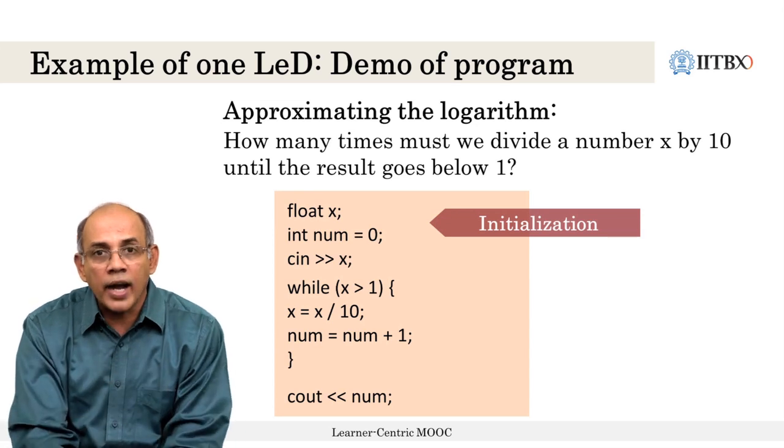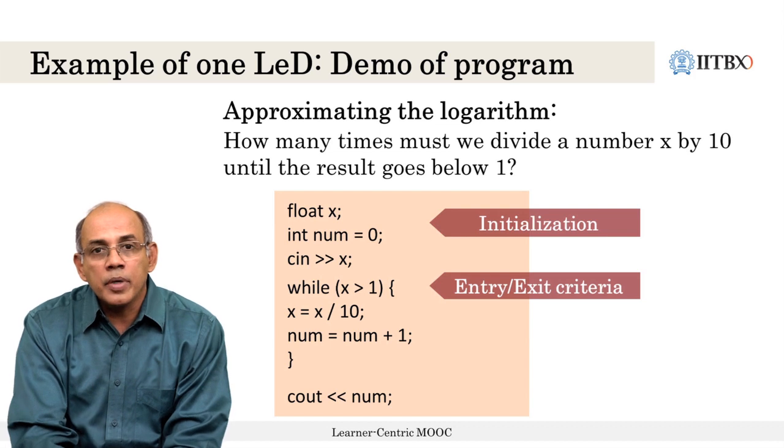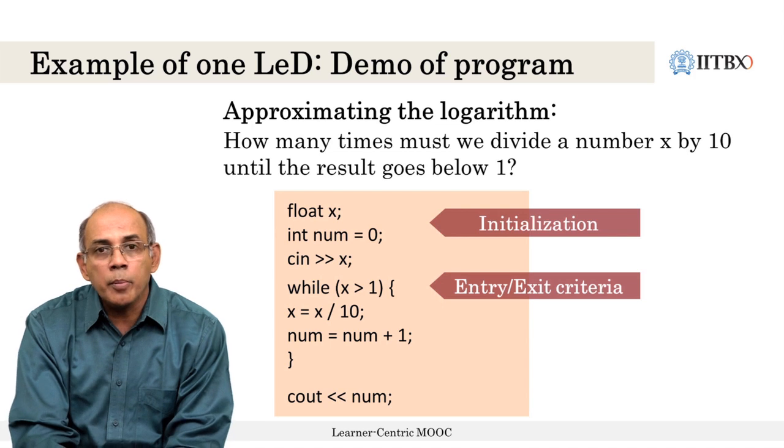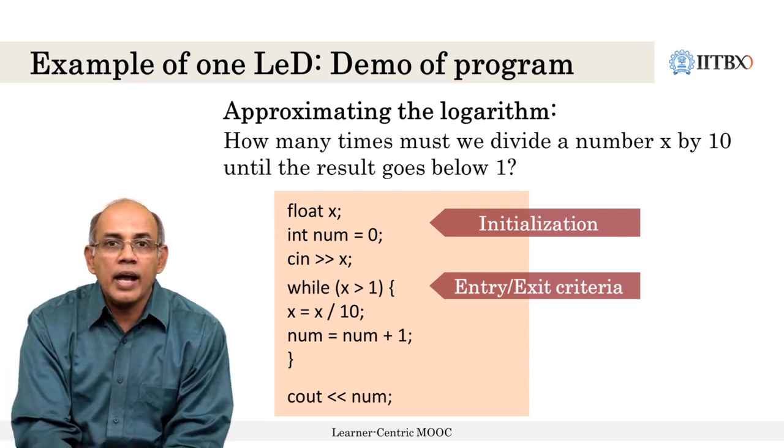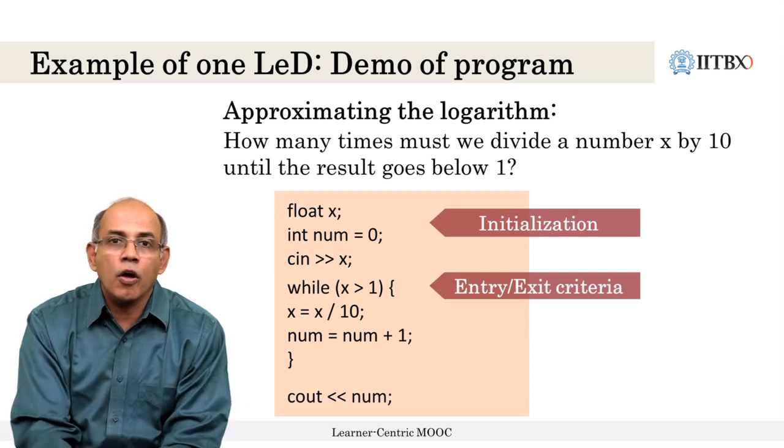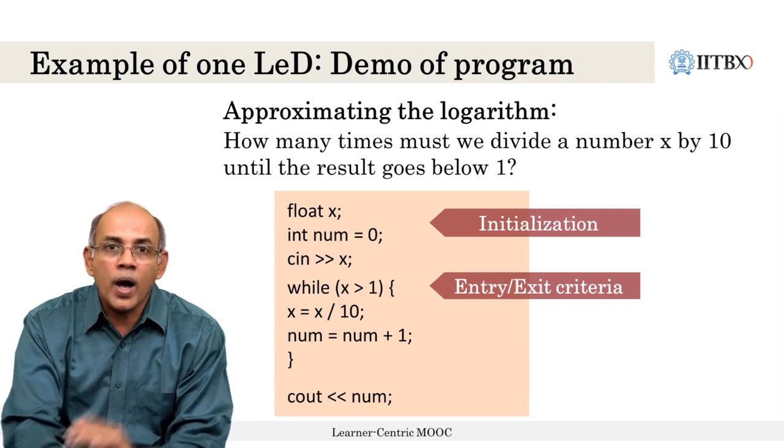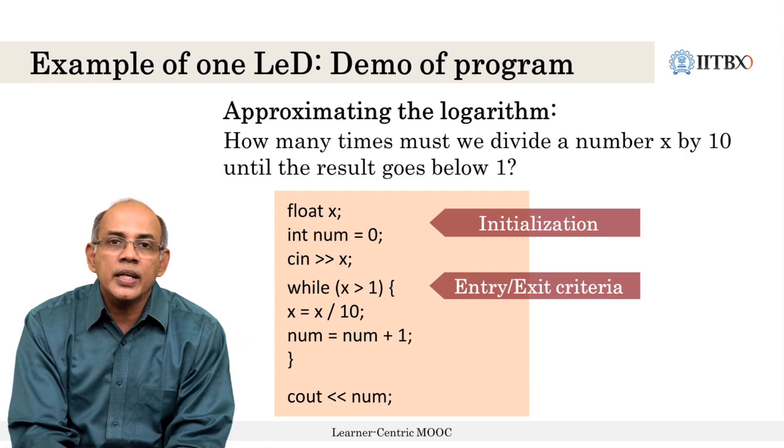Then there would be the entry and the exit criteria. Suppose we are using a while loop, we would be actually checking the entry criteria as the number being greater than 1 and the exit criteria as the current value of the number being less than 1. And then at the end, you would have the value of the logarithm being printed out. Now, this entire thing can form one LED in a series of LEDs on the topic of iteration.